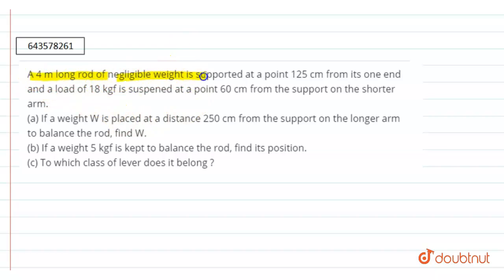A four meter long rod of negligible weight is supported at 0.125 centimeter from its one end, and a load of 18 kgf is suspended at a point 60 centimeter from the support on the shorter arm. If a weight w is placed at a distance of 250 centimeter from the support on the longer arm to balance the rod, find w.